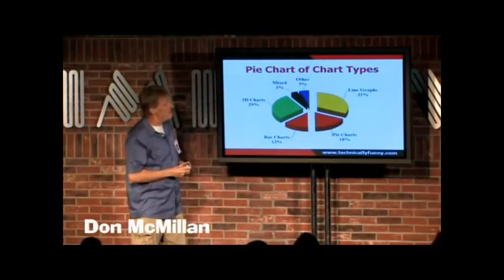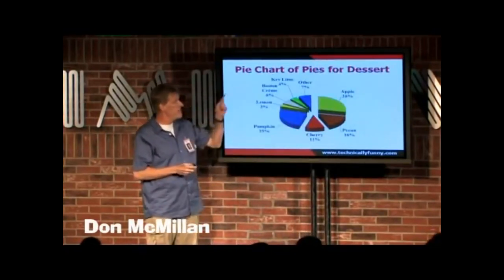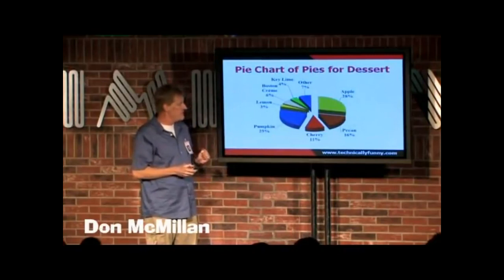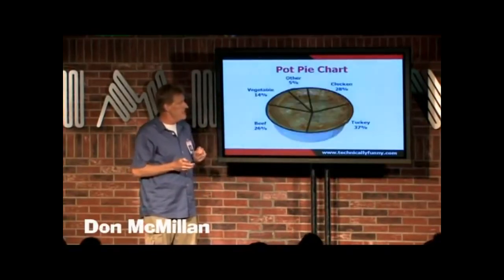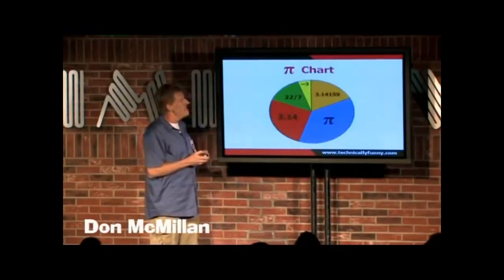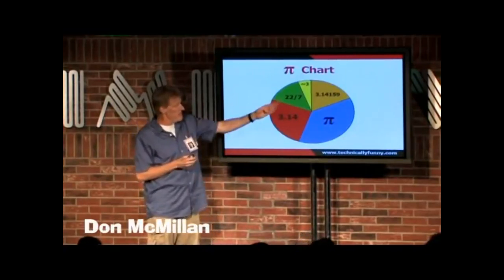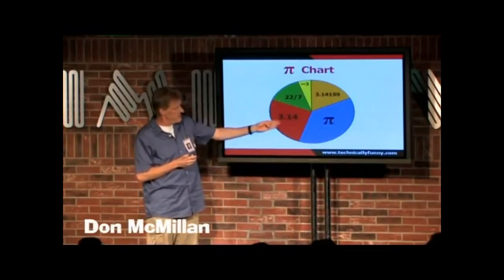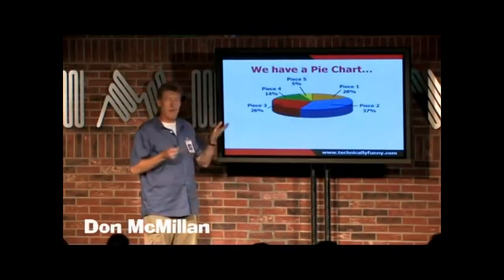Back to the charts. Here's a pie chart of chart types: 3D charts, bar charts, pie charts. Here's a pie chart of pies for dessert: lemon, pumpkin, cherry, pecan, apple. Here's a pizza pie chart. Here's a pot pie chart — and there's a better pot pie chart. Here's a pie chart with values of pi for the nerds: 3.14159, 22/7, 3.14, and pie itself.